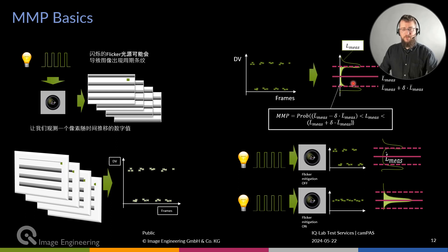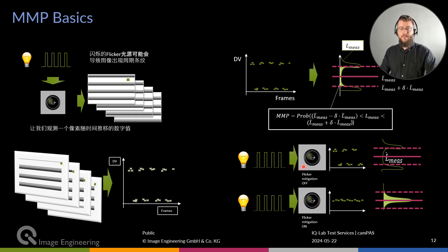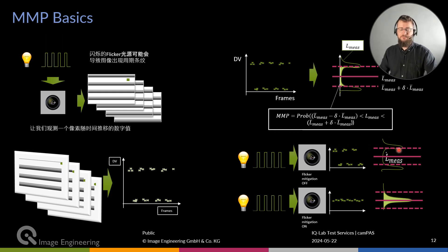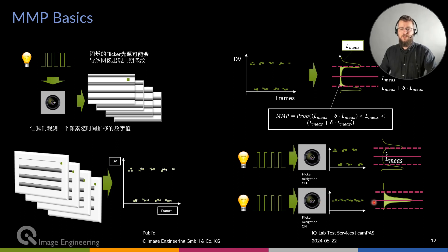To understand MMP better: with flicker mitigation turned off, we send modulated light through the system and see the digital values fluctuate up and down with the banding artifacts — the MMP value is nearly zero. With flicker mitigation turned on, there is only a noisy distribution and almost all digital values fall within the boundaries — in this case MMP is one.